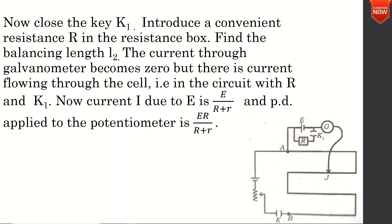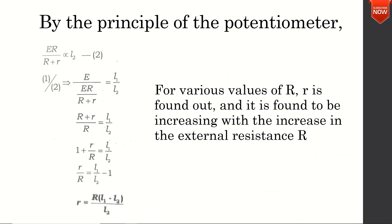With K1 closed and convenient resistance R in the resistance box, find the balancing length L2 for zero deflection in the galvanometer. The current I is equal to E divided by total resistance, where total resistance is external resistance plus internal resistance — that is, capital R plus small r. The potential difference applied to the potentiometer is ER divided by R plus r, which is proportional to L2. This is equation number 2.